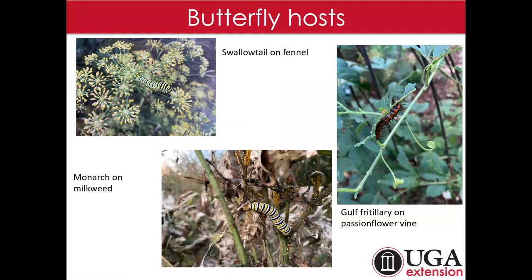Looking at butterfly host plants — these are just caterpillars in my yard. Top left is a swallowtail — probably my favorite butterfly, and I think their caterpillar is actually the coolest looking one. They rely on fennel and dill. Monarchs rely wholly on milkweeds as their host plants, so you need to have milkweeds for your monarch. And that really pretty passion flower vine we saw earlier hosts the gulf fritillary. As that larvae develops it chews up the leaves, but those flowers are a showstopper, and you get the added benefit of a host plant for the gulf fritillary.